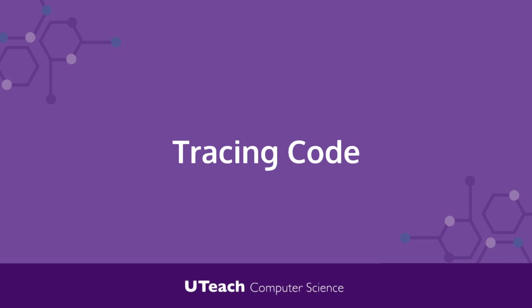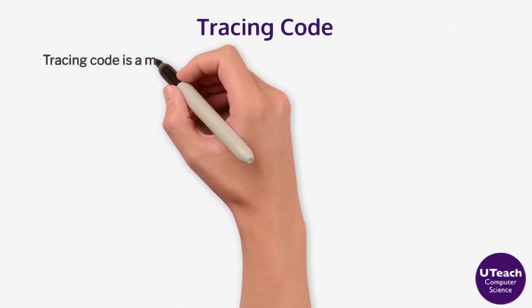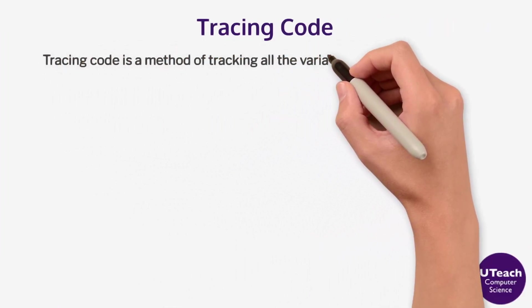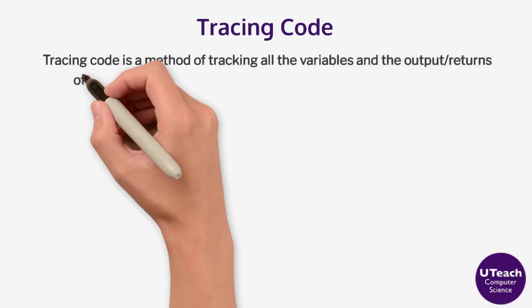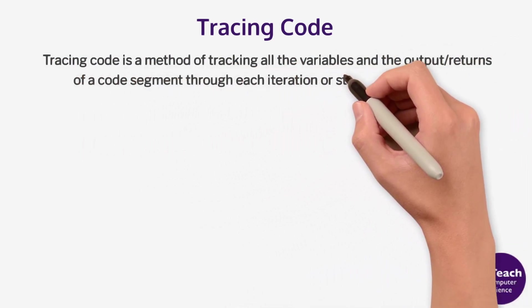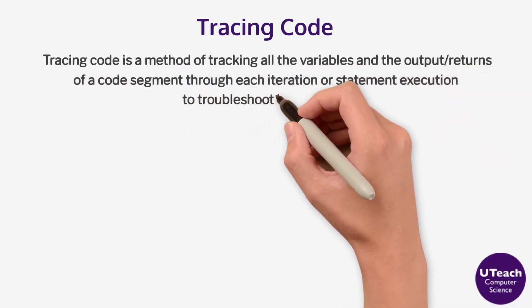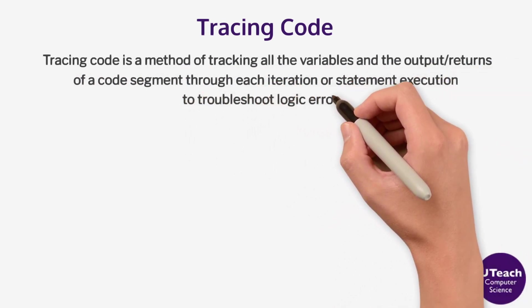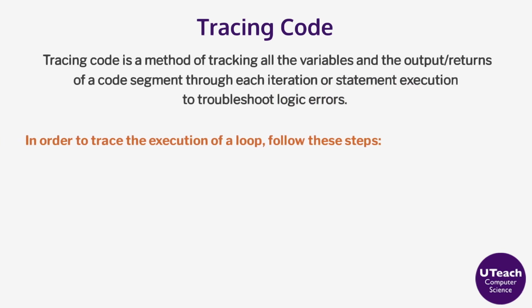Tracing code is a method of tracking all the variables and the output or returns of a code segment through each iteration or statement execution to troubleshoot logic errors. In order to trace the execution of a loop, follow these steps.